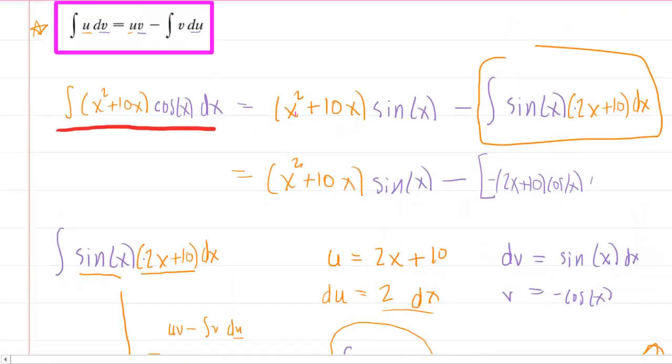And then it was plus 2 sine of x. And then really, the only other way to simplify it is to take this minus sign on the outside of our bracket and distribute it inward. So putting it all together, finally, we're going to have x² + 10x times the sine of x.